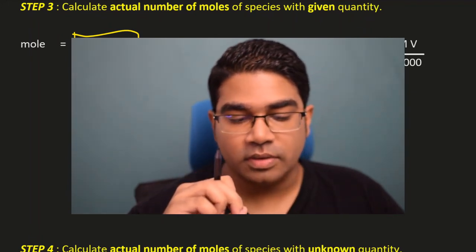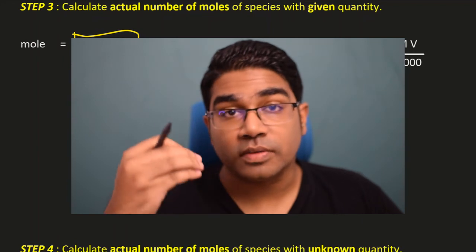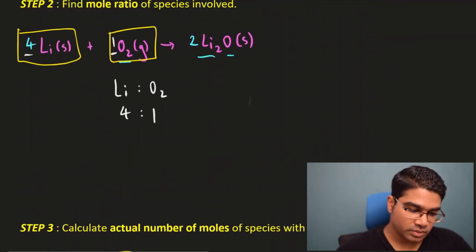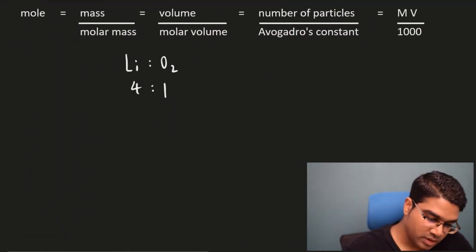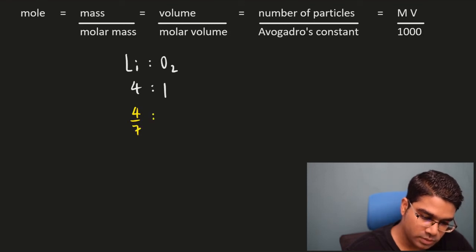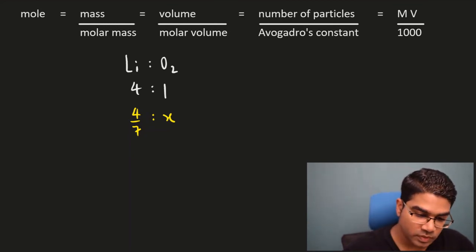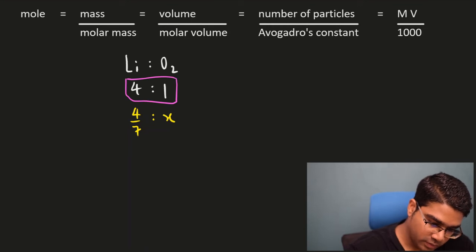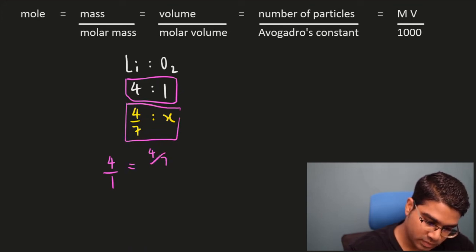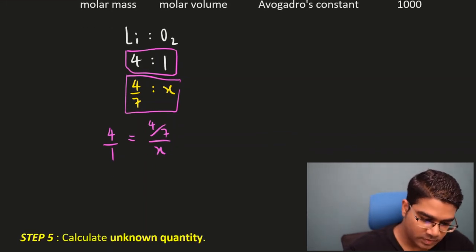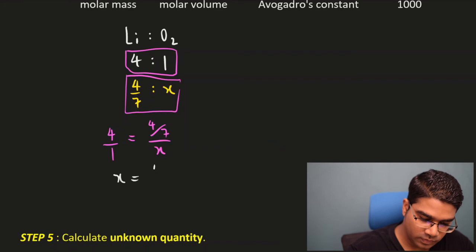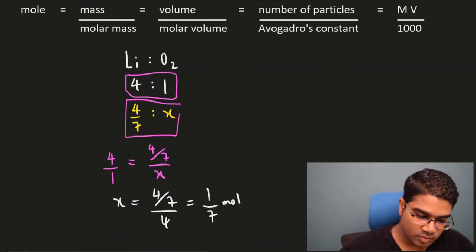Now we use the mole ratio to find the actual moles of oxygen. The ratio of lithium to oxygen is 4 to 1, so: 4/1 = (4/7)/X. Solving for X gives X = (4/7) ÷ 4 = 1/7 moles. So the moles of oxygen = 1/7 moles.